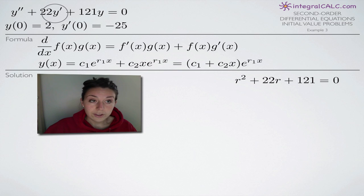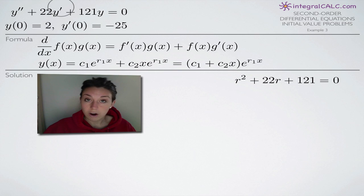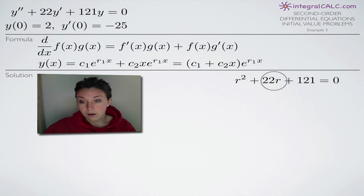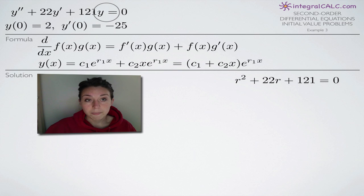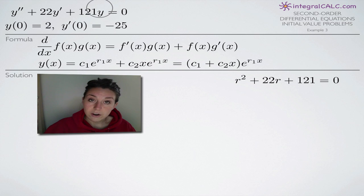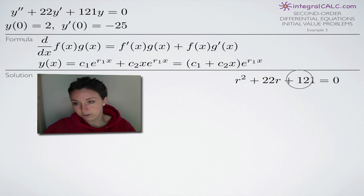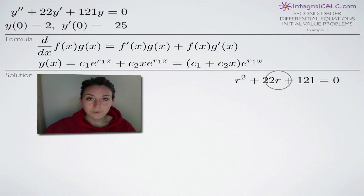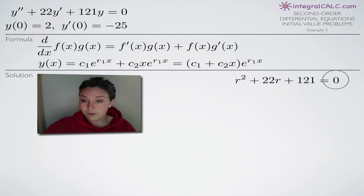For y prime, the derivative of y with one hash mark, we use r to the one, which is just r. So we put r squared here and r for y prime. Then for the y variable with zero hash marks, that's r to the zero. Anything raised to the zero power is just 1, so we multiply 121 by 1, ending up with 121. That's how we convert from y's to r's — we end up with this equation involving r.